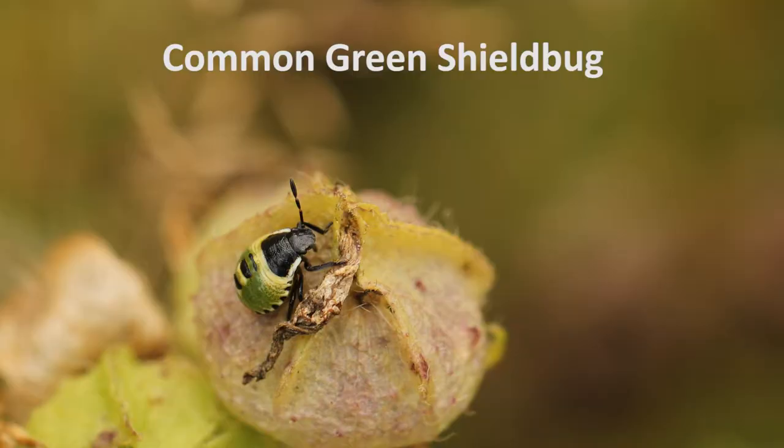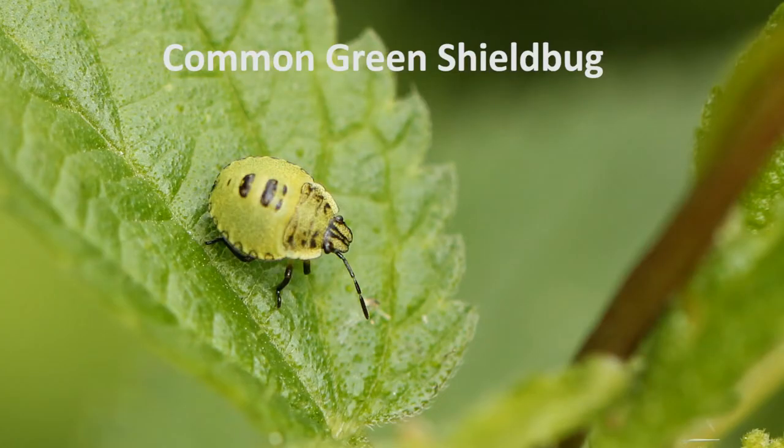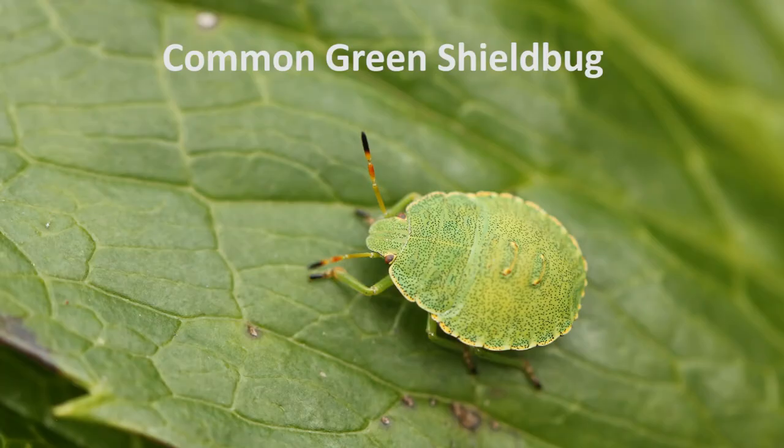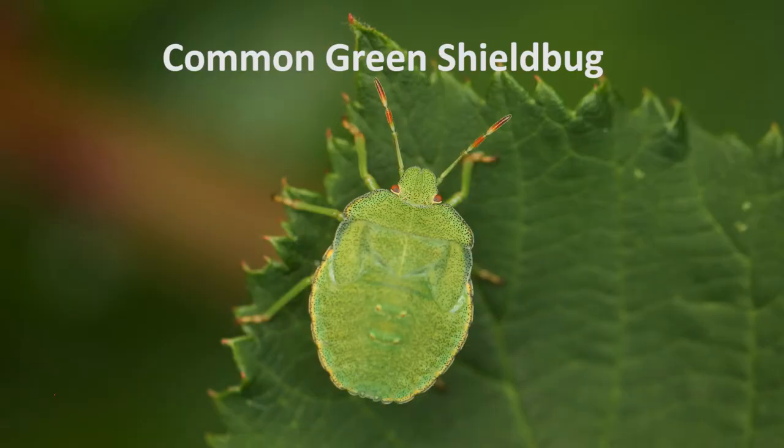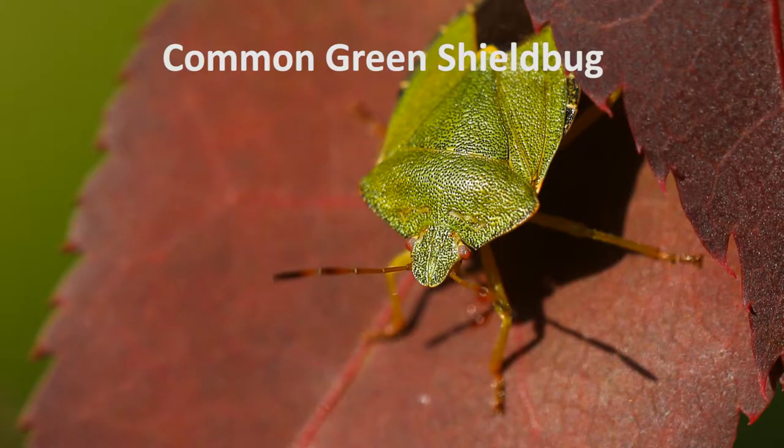An important point: true bugs undergo incomplete metamorphosis as part of their life cycle. Incomplete metamorphosis is the process where juvenile insects look like miniature versions of the adults — perhaps missing wings and definitely smaller. For example, shield bug nymphs look like little mini shield bugs and they get bigger; they do change shape, but it's classed as incomplete metamorphosis, as opposed to a complete metamorphosis such as a caterpillar changing into a butterfly.